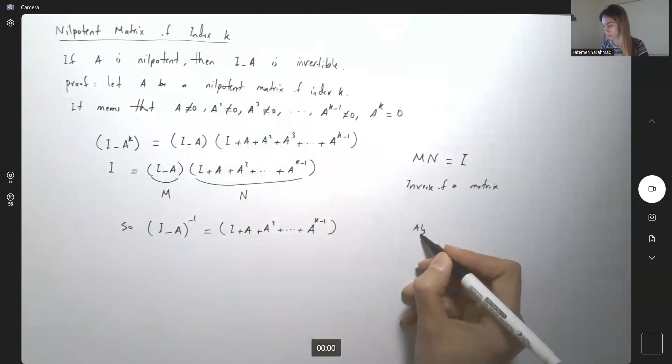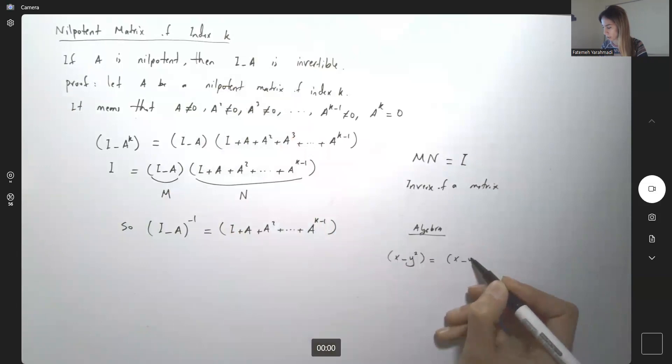Just a quick algebra note for you. So if you have, for example, X minus Y to power 2, this can be written as X squared, X minus Y times X plus Y. If you have, for example, X to power 3 minus Y to power 3, you have more factorization. Or if you have X to power 4 minus Y to power 4, you have more factorization.